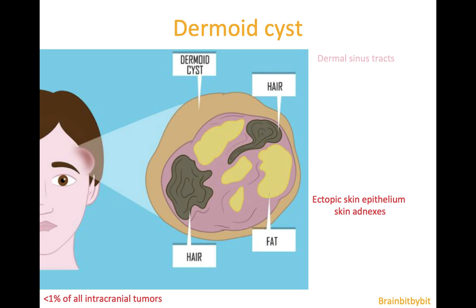Dermoid cysts consist of ectopic skin tissue, and they also include the skin appendages — so the hair follicles, the sebaceous glands, and the sweat glands.